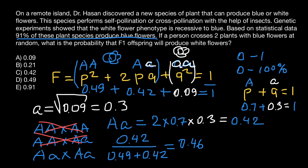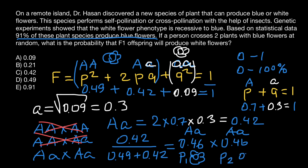Only now can we do our final calculation. The probability that parent one — a plant with blue flowers — is heterozygous is 0.46. The probability that parent two is also heterozygous is 0.46. So the probability that both parents are heterozygous is 0.46 times 0.46, and the rounded number in our answer is 0.21. As you can see, this is answer B.